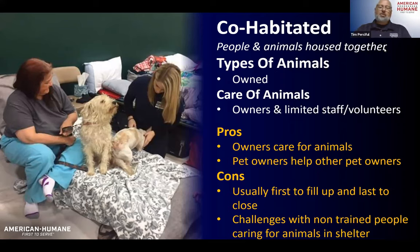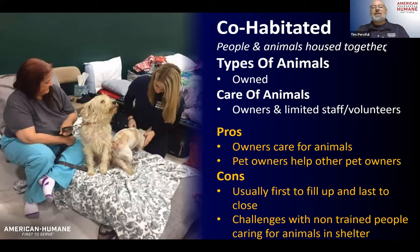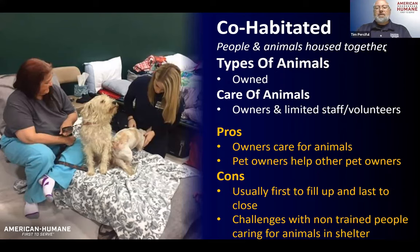Traditionally these shelters have been in community centers or churches or other non-traditional areas, but they're becoming a lot more popular. Another challenge with co-habitated and co-located shelters is that people are not trained on caring for animals — they may not know how to use a slip lead, may not be used to picking up animal feces. But they usually pick it up pretty quickly, so it's less of a challenge.